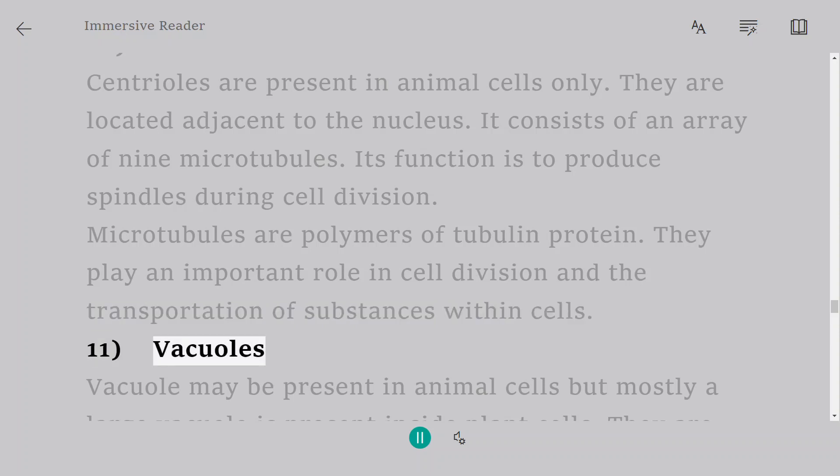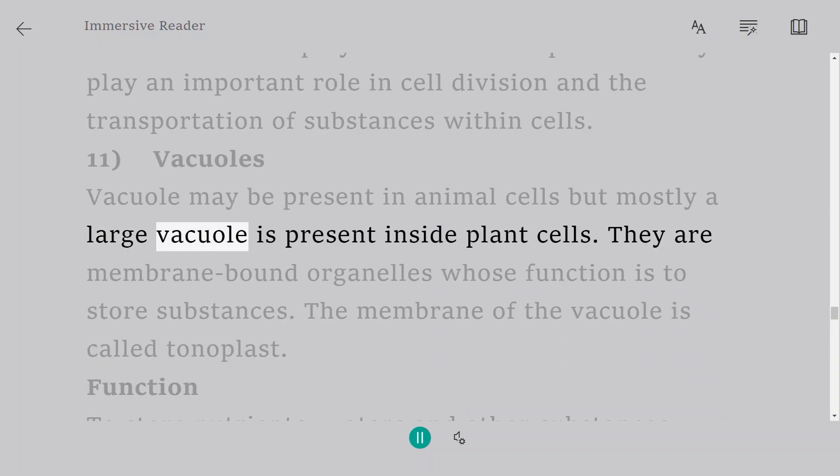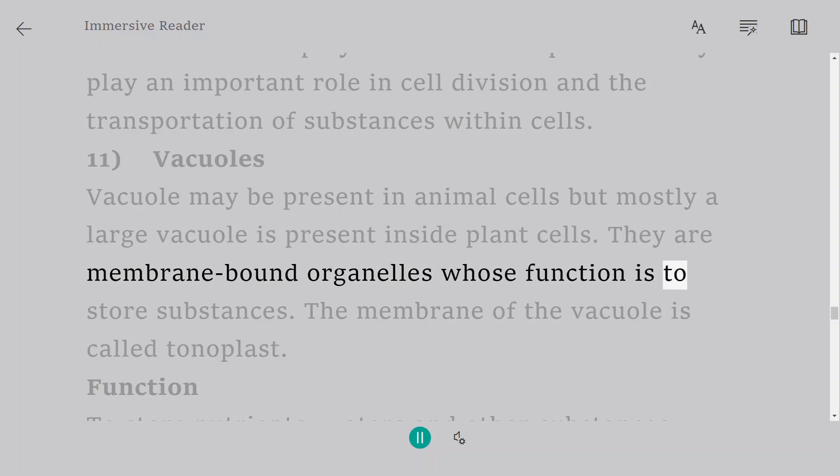11. Vacuoles. Vacuole may be present in animal cells but mostly a large vacuole is present inside plant cells. They are membrane-bound organelles whose function is to store substances. The membrane of the vacuole is called tonoplast.